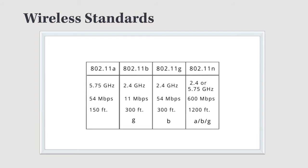802.11a transmits on the 5.75 GHz bandwidth, operates at 54 megabits per second, but the transmission distance is only 150 feet. Because it operates on the 5.7 GHz bandwidth, it is not compatible with B or G networks.